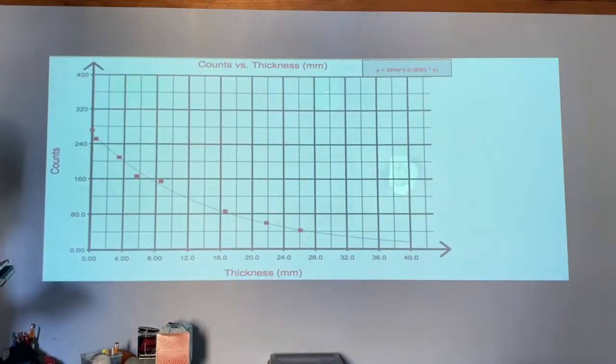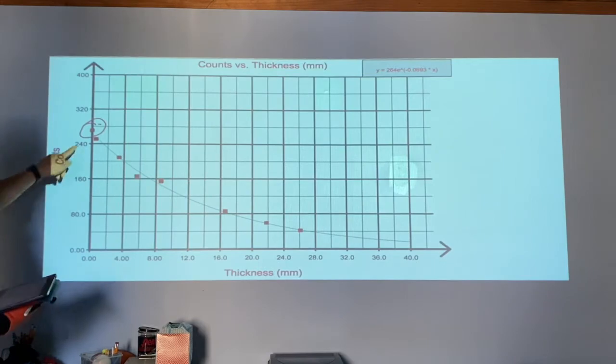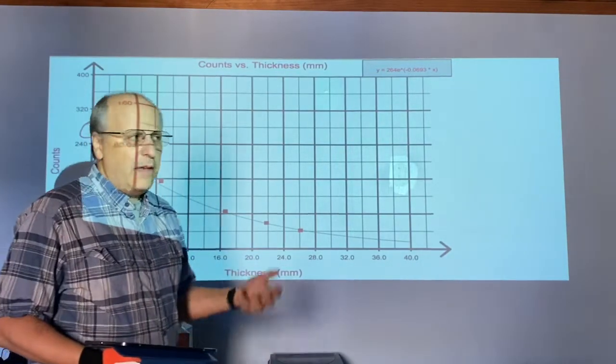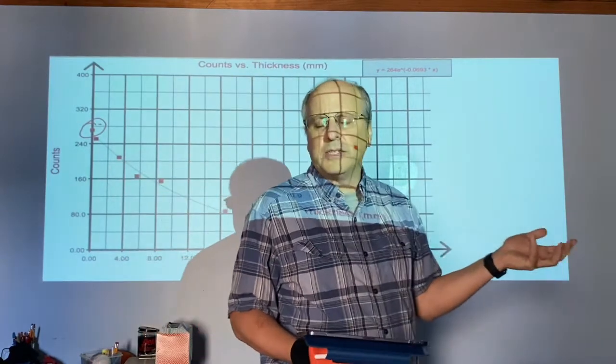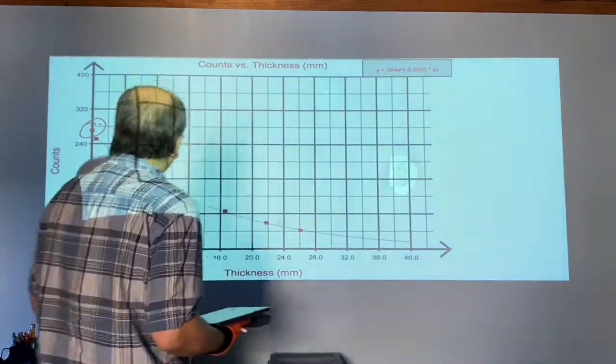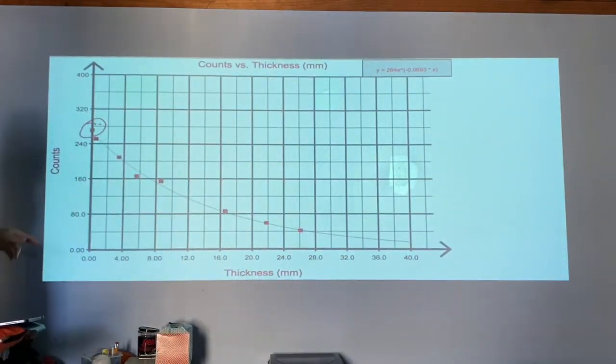This number would represent how many particles would make it through if there was no shield trying to stop the radiation. That's like your original amount. So here it's around 280.